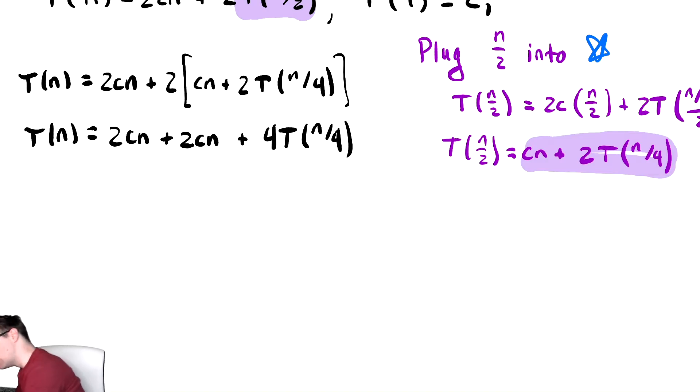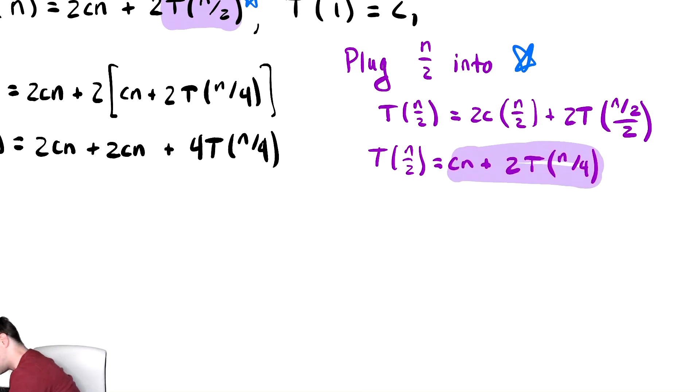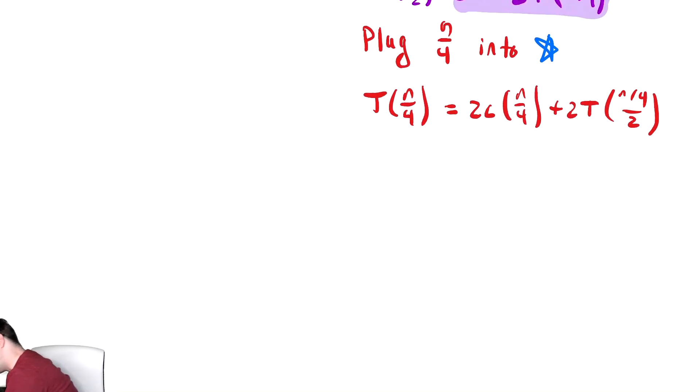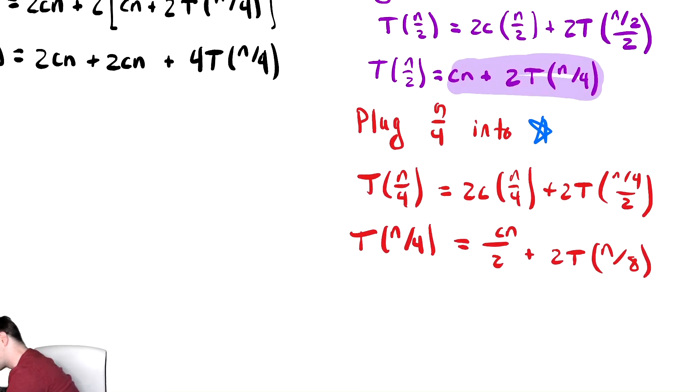We need to do the exact same thing but with n over 4, so we're going to plug n over 4 back into the equation. Let's do that in red. Doing so, we get T of n over 4 equals 2c times n over 4 plus 2T of n over 8. With simplification, that's T of n over 4 equals cn over 2 plus 2T of n over 8. We then replace the n over 4 in the original expression.